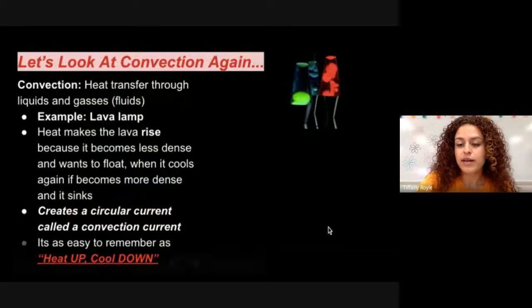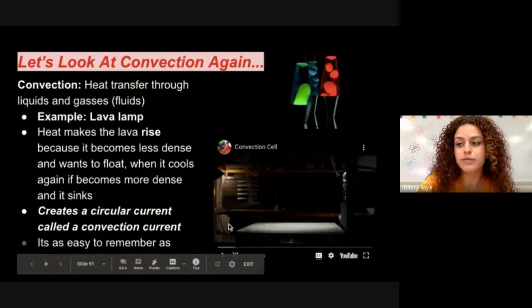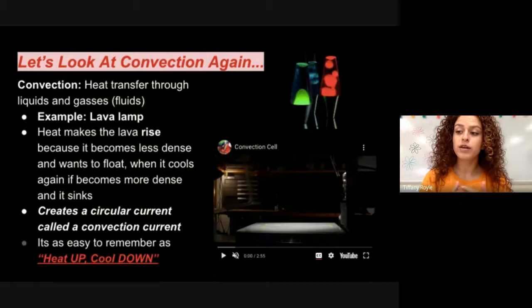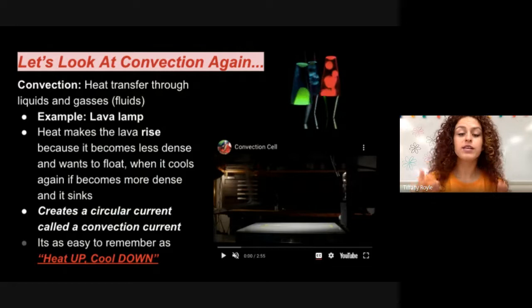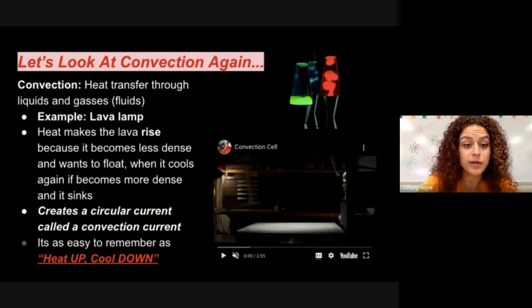So again, real quick, looking at this convection cell, just want to make sure we hit all the main points. What you should know from that video is that the heater on the bottom is warming up the water, and the hot water rises, pushing the cold water on top out of the way. The cold water is pushed down towards the heater, then it is warmed by the heater. And once hot, that water starts to rise, continuing the cycle of movement. And this happens in air too. And this is actually what causes wind and air movement.